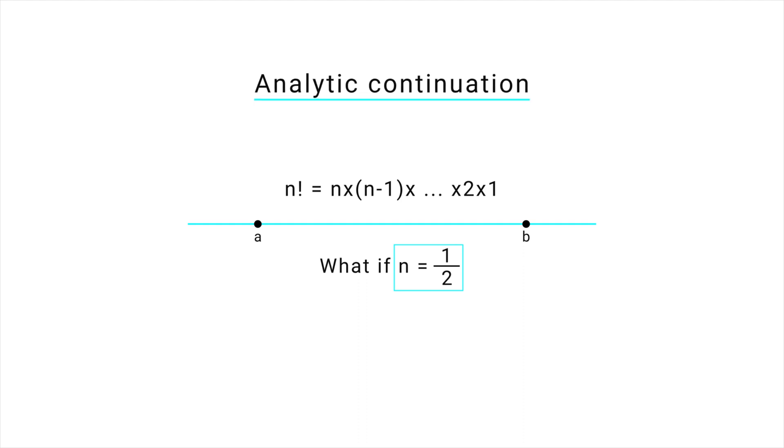Well, one way to do it is to use analytic continuation, which basically means finding a formula that works for all values of n, not just positive integers. And it turns out there is a formula called the gamma function, that expands the factorial function to all complex numbers.